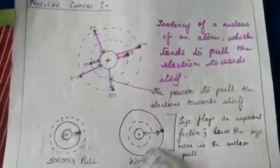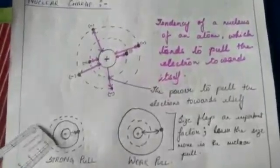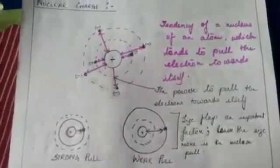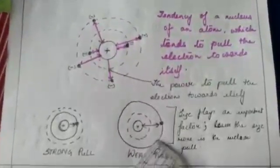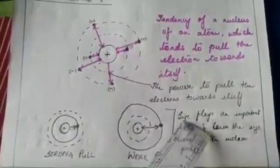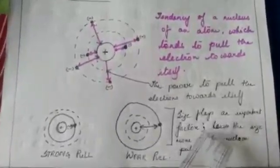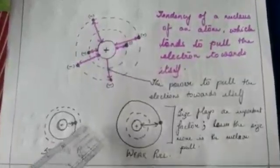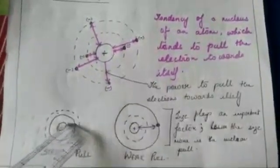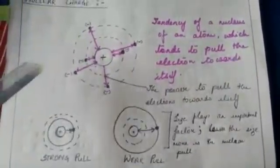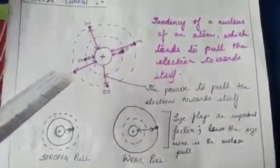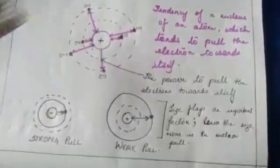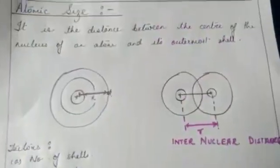In one diagram the size of the atom is very small, whereas in the other the size is very big. When the size of the atom is smaller, the electrons experience a much bigger pull than when the size is bigger. Thus, size plays a very important factor in nuclear pull. More pull means less atomic size; less pull means more atomic size.